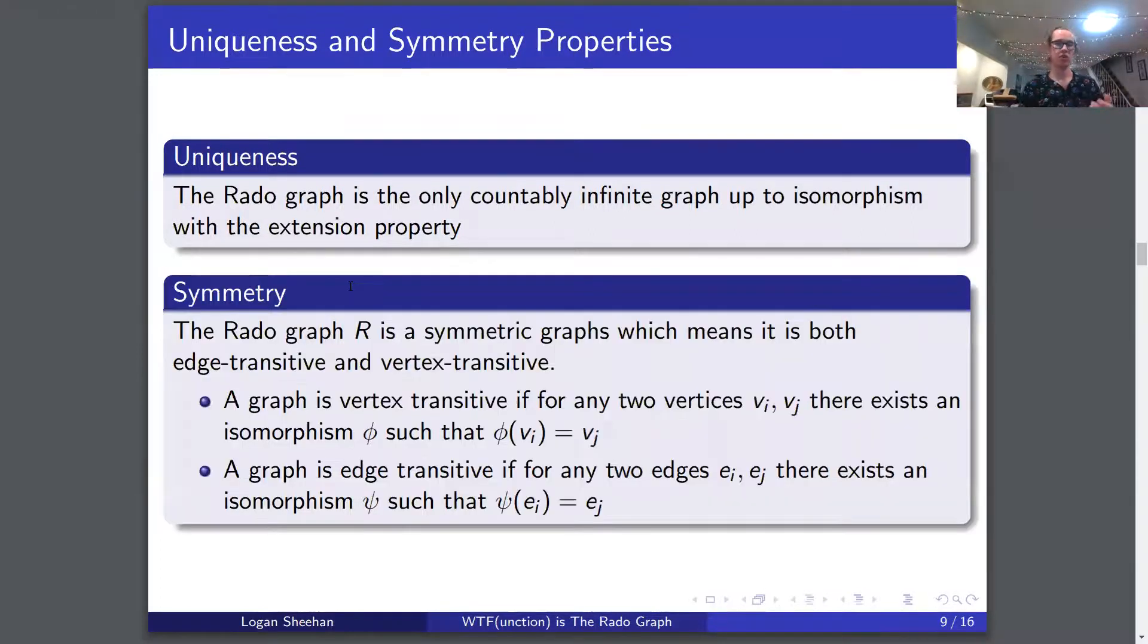Now onto symmetry. The Rado graph R is a symmetric graph, which means it is both edge transitive and vertex transitive. The graph is vertex transitive if for any two vertices v i and v j, there exists an isomorphism phi such that phi of v i equals v j. Same for edge transitive: for two edges e i and e j, there exists an isomorphism psi such that psi of e i equals e j.